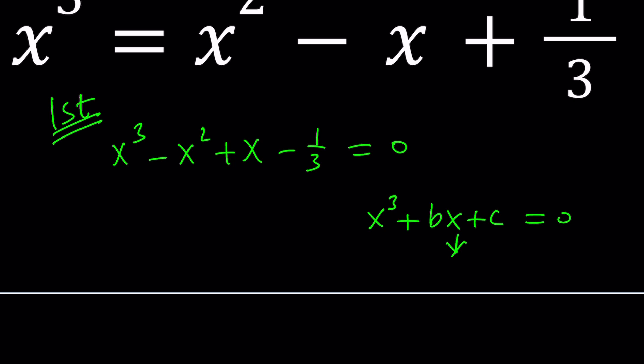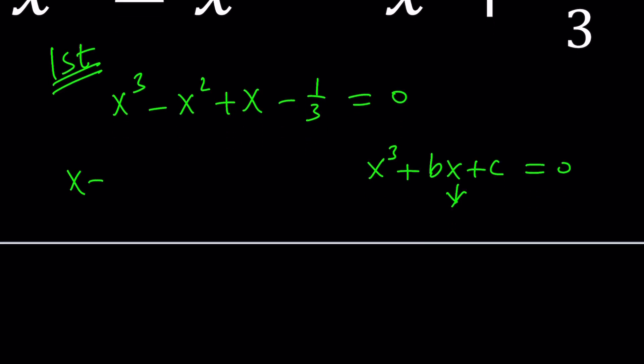Let's see how we can do that. I'm going to replace x with y plus one third. Let me tell you where that comes from. You look at the coefficient of x squared, which is negative one in this case. You negate it, which becomes positive one. And then you divide it by the degree of this polynomial, which is three. That's how you get that one third with the plus sign.